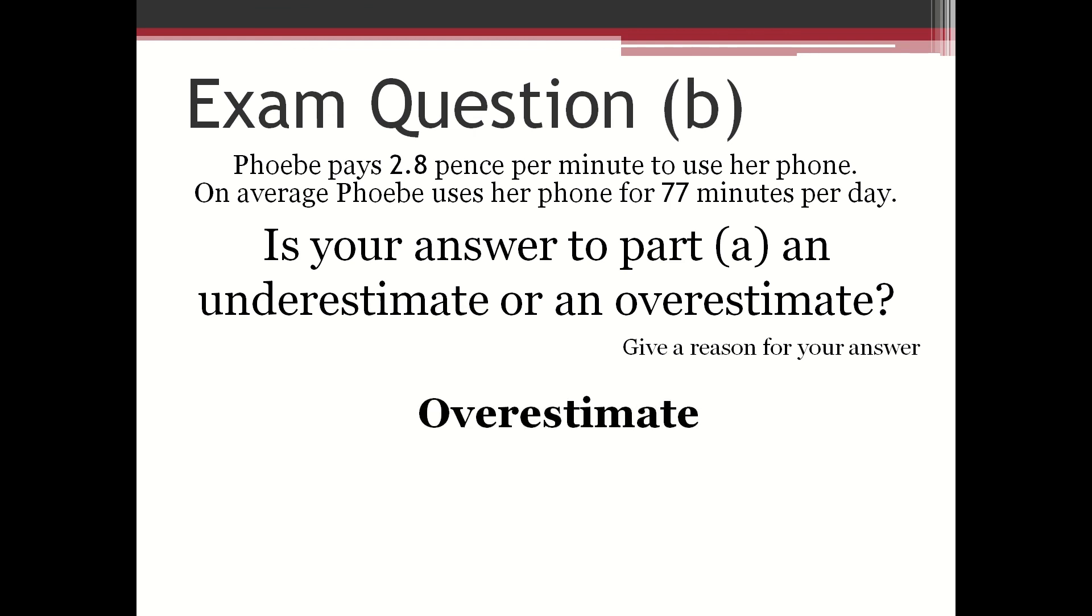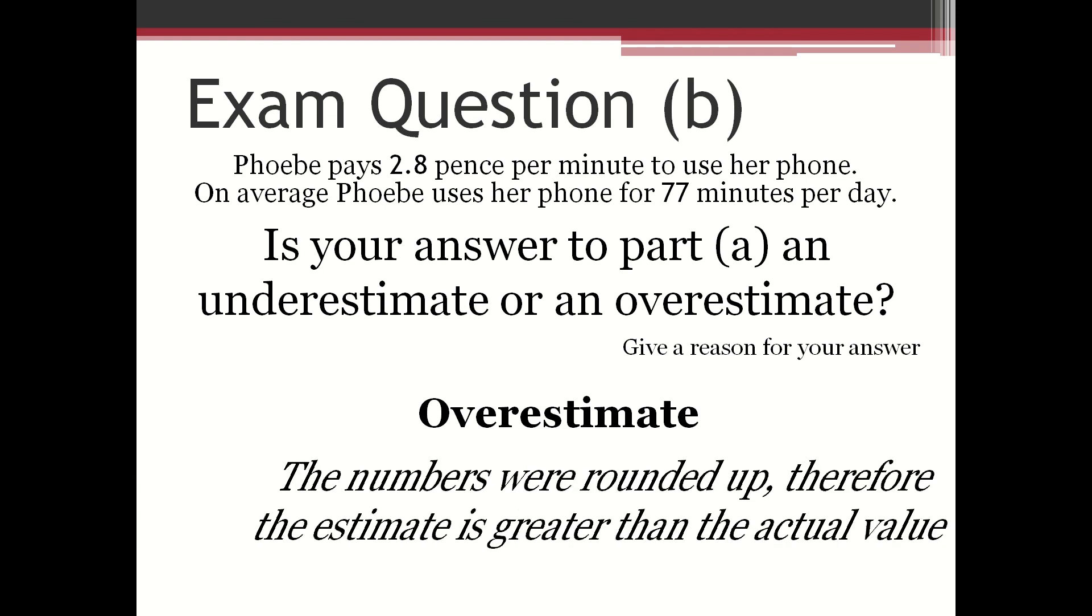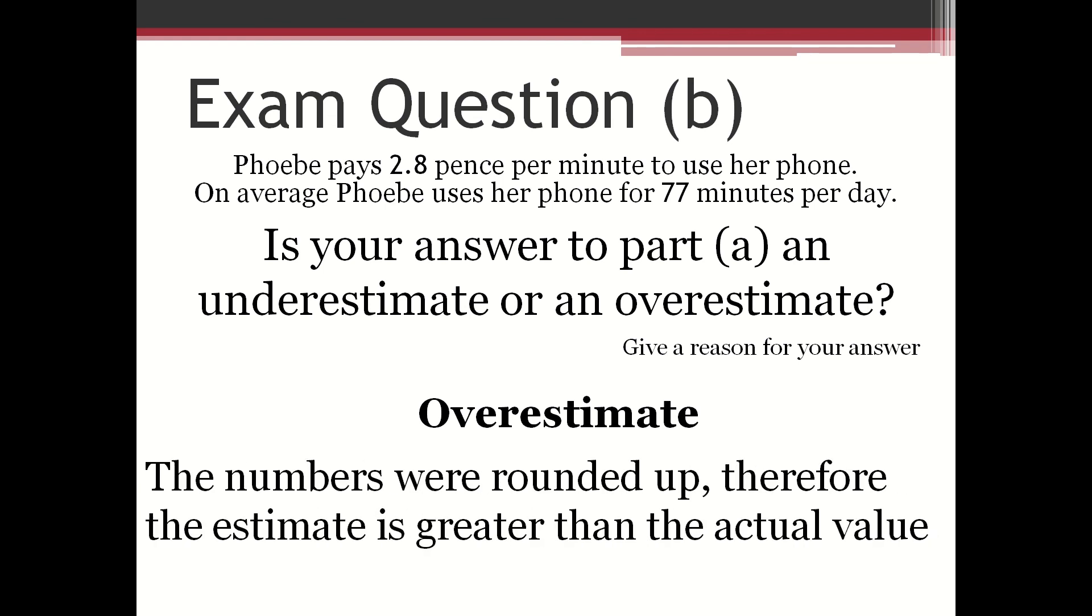The answer is an overestimate. And the reason is the numbers were rounded up. Therefore, the estimate is greater than the actual value. In order to get the two marks for this question, you have to state whether it is an under or overestimate, and then you have to give your reason why.